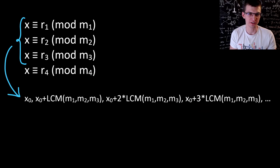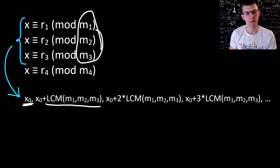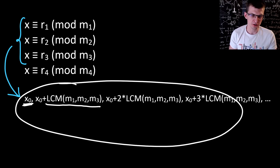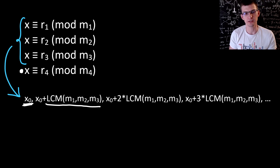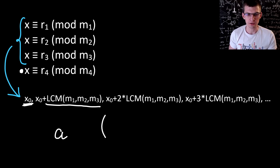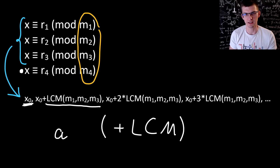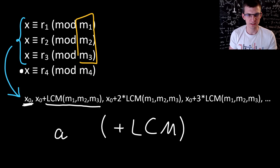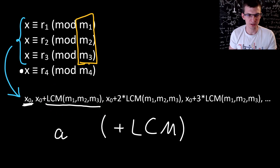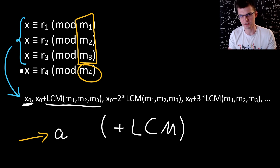This method still works if there are more congruences. Say you found a solution for the first three congruences x0 and computed the least common multiple of the first three moduli. Then there is a sequence of solutions for the first three congruences, and in this sequence we need to find the first value satisfying the fourth congruence. After we find it — let's call it A — you can keep increasing it by the LCM of all four moduli. We already know the LCM of the previous moduli, so we just compute LCM of that and the new modulus. Then the sequence of available solutions is A, A plus LCM, A plus twice LCM, A plus three times LCM, and so on.